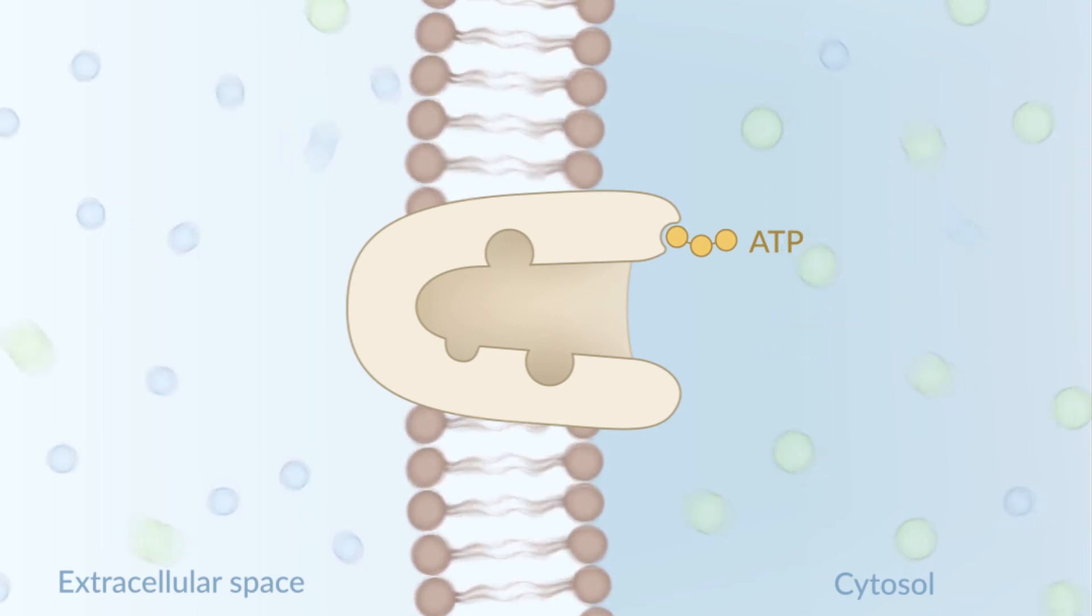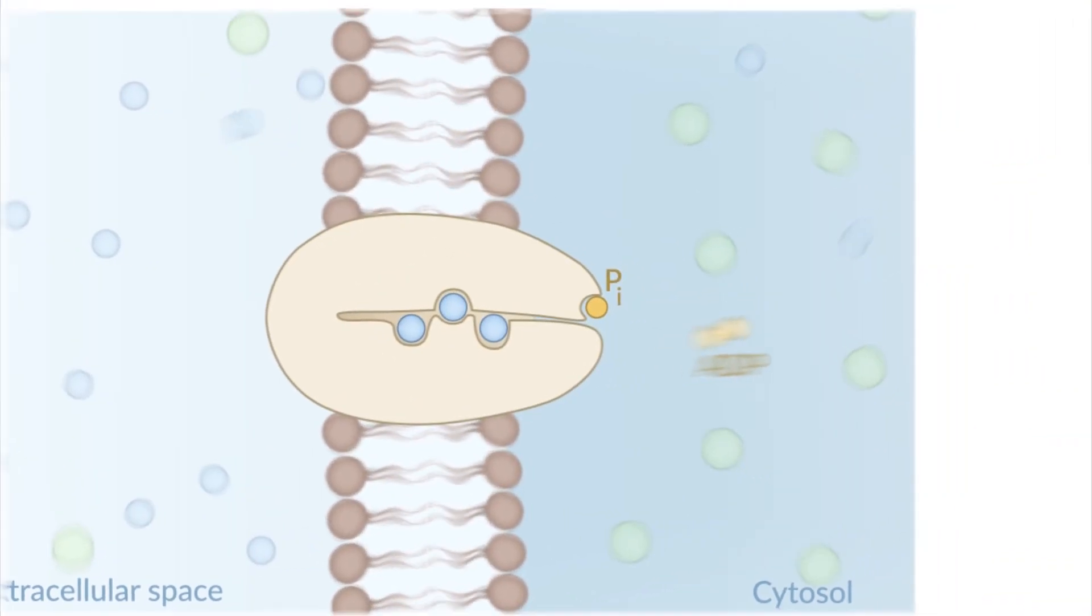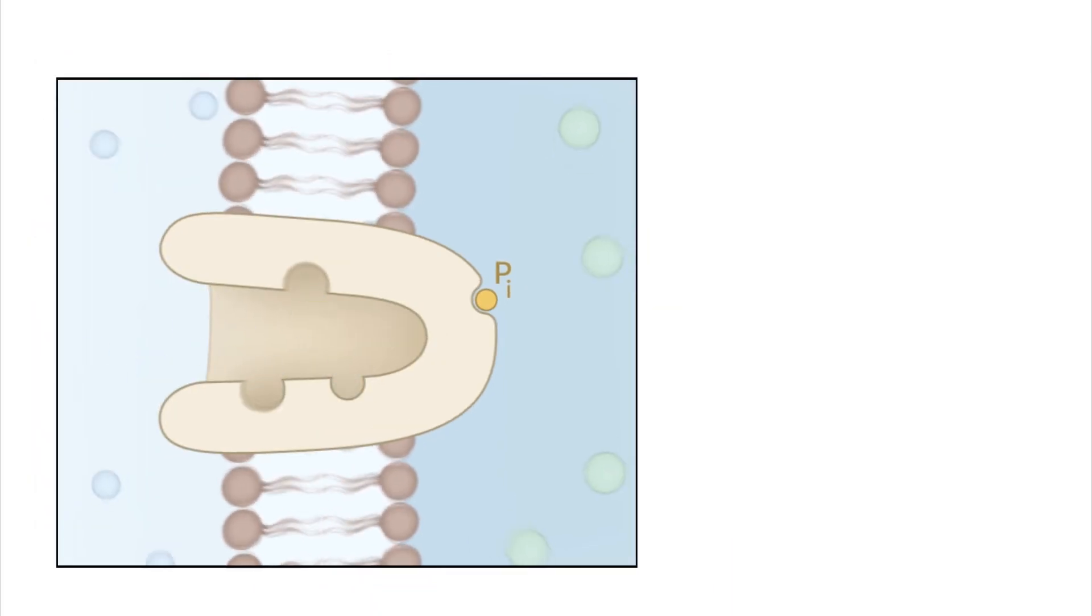Three sodium ions now bind to the empty protein for transport into the extracellular space, starting a new cycle.